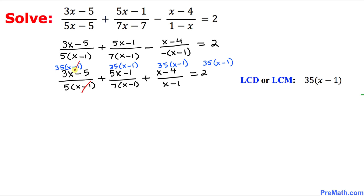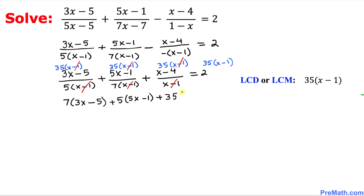As we can see, the x minus 1 cancels out with x minus 1, and 5 goes into 35 seven times, so we end up with 7 times 3x minus 5. Next, x minus 1 cancels and 7 goes into 35 five times, giving us plus 5 times 5x minus 1. Over here the x minus 1 cancels as well, giving us 35 times x minus 4.